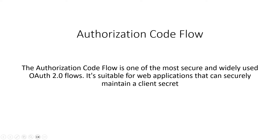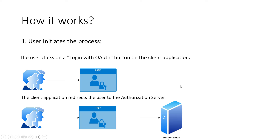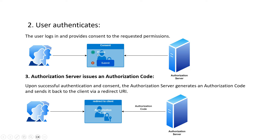Even without PKCE it can be used. Let's understand how the authorization code flow works. Let's say you are navigating to a web page and you don't have to provide your credentials directly, but you are looking for a 'Login with Google' or Azure or any other authorization provider. You click on that link — say Google — and it navigates to the authorization server. The authorization server will request you to authorize with their own strategy. If you look at Google, you will be logging into your Google account.